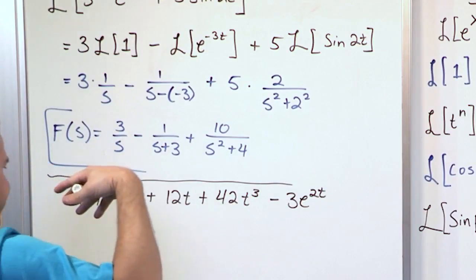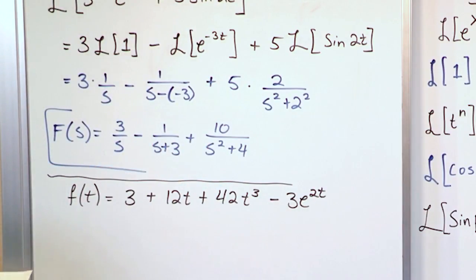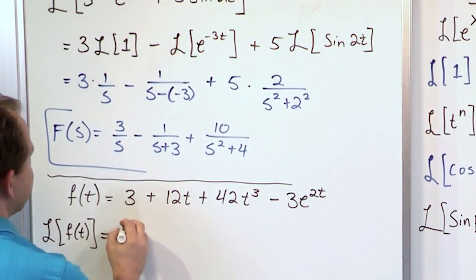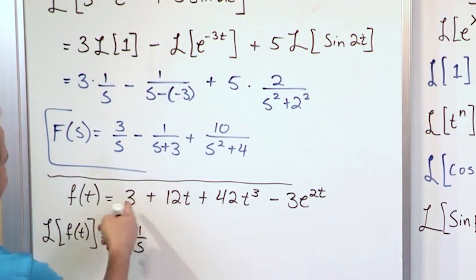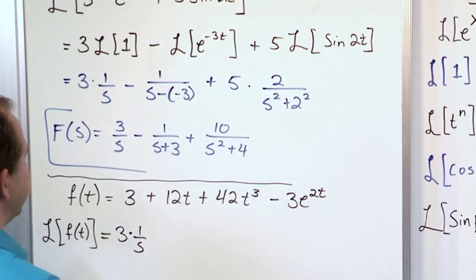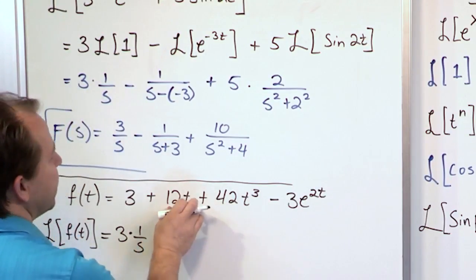Again four terms each linked by a plus, but we know how to deal with each one separately. So rather than just throw it all on the paper, let's take it one step at a time and look at each little guy here. So the Laplace transform of f of t is equal to the Laplace transform of 3, which is 3 times 1 over s. Then we have 12t.